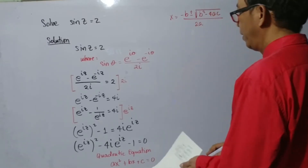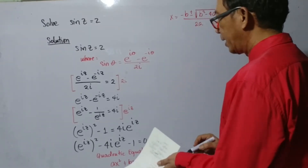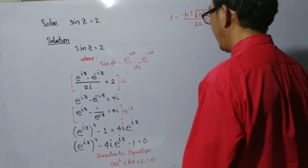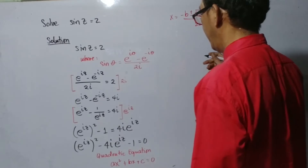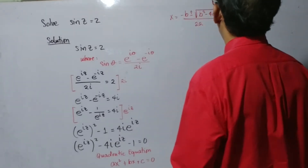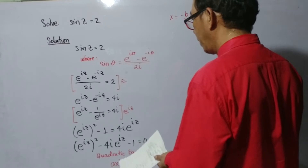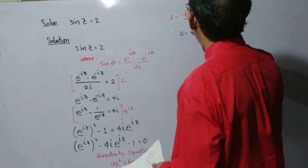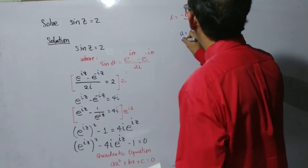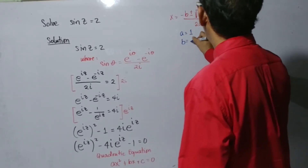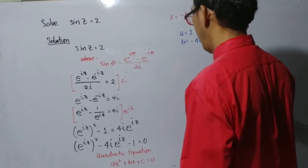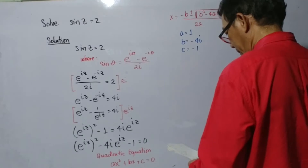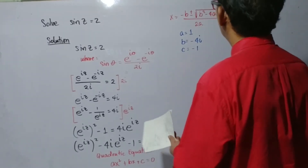Our x here is e to the iz. What is our a? Our a is 1. Our b is negative 4i. And our c is negative 1. So we substitute these values.